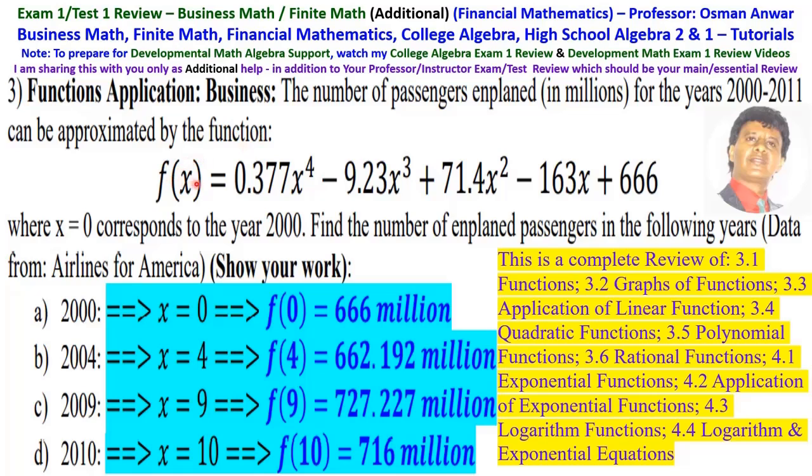f(x) equals 0.377x to the 4th minus 9.23x to the 3rd plus 71.4x squared minus 163x plus 666, where x equals 0 corresponds to year 2000, that is the start point. Find the number of enplaned passengers in the following years.